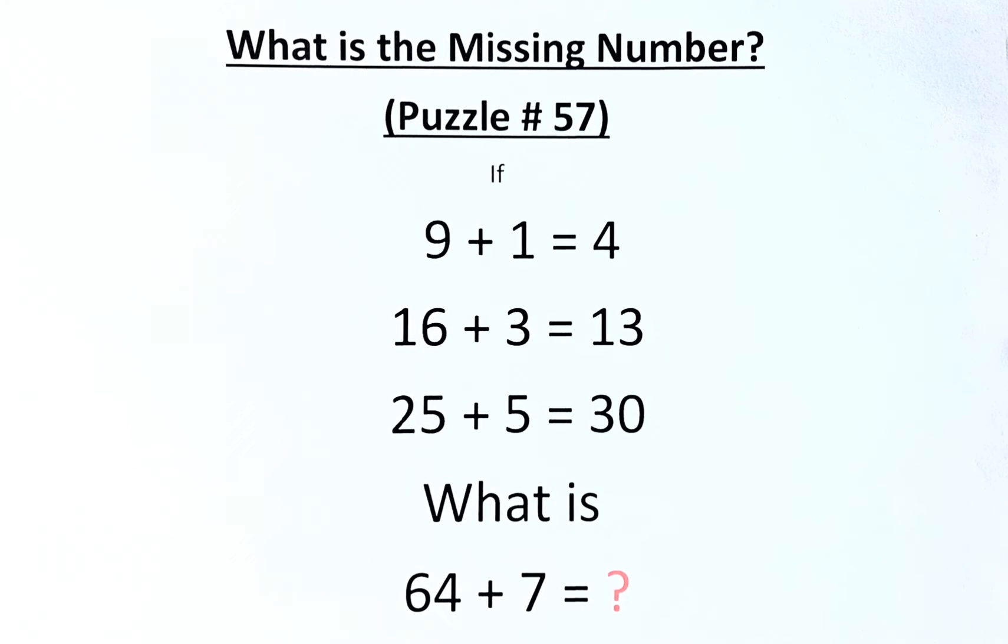If you have managed to solve this puzzle, well done. If not, follow my reasoning. So 9 plus 1 equals 4, what you look at is the left-hand side. Left-hand side are all square numbers, meaning you need to square root the answer.